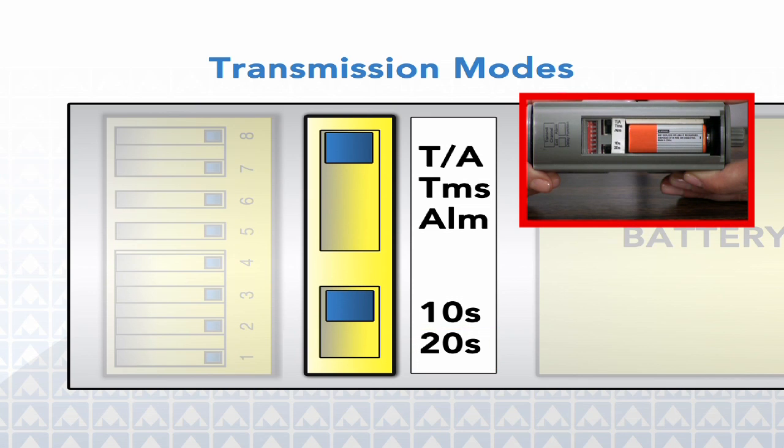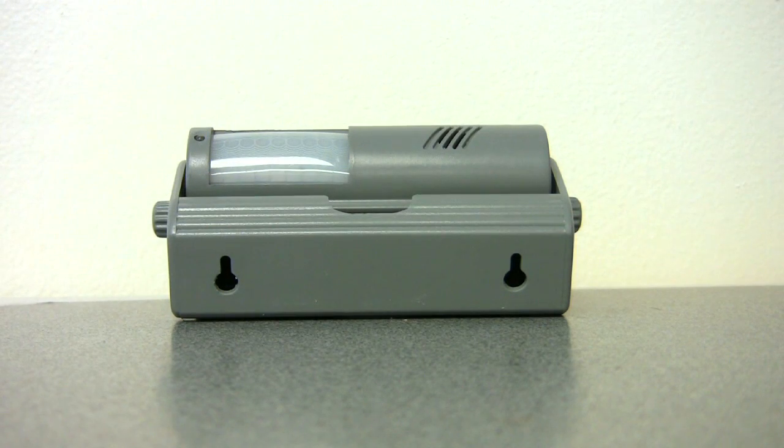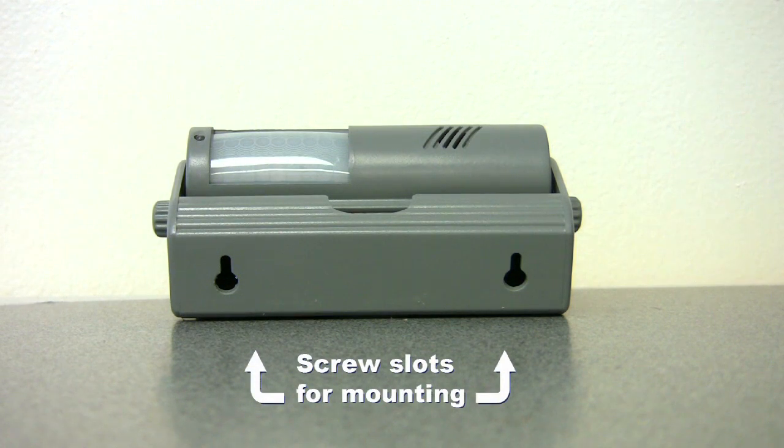The eight position red and white dip switches indicate the channel the transmitter or receiver is set to. They are numbered one through eight. On the bottom side of the holster are the screw slots for mounting the device.